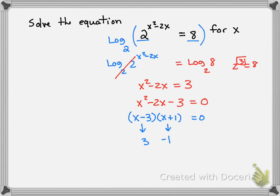Now I should check to make sure that both of these answers work back in my original equation. If I were to do 2 to the 3 squared minus 2 times 3, well that would be 2 to the 9 minus 6, 2 to the 3, and that's equal to 8. So that checks.